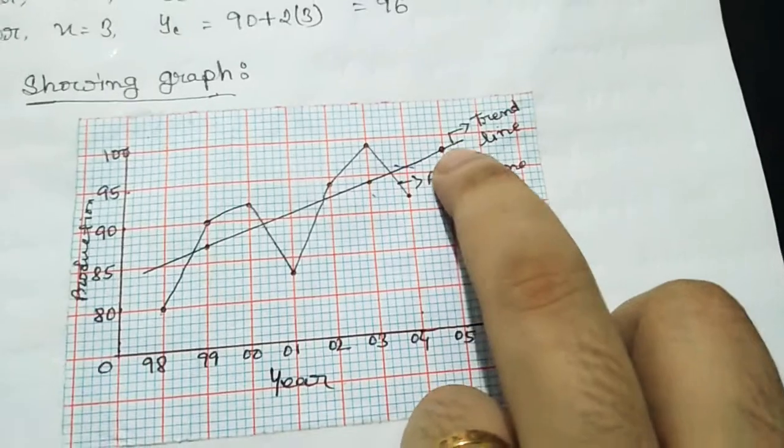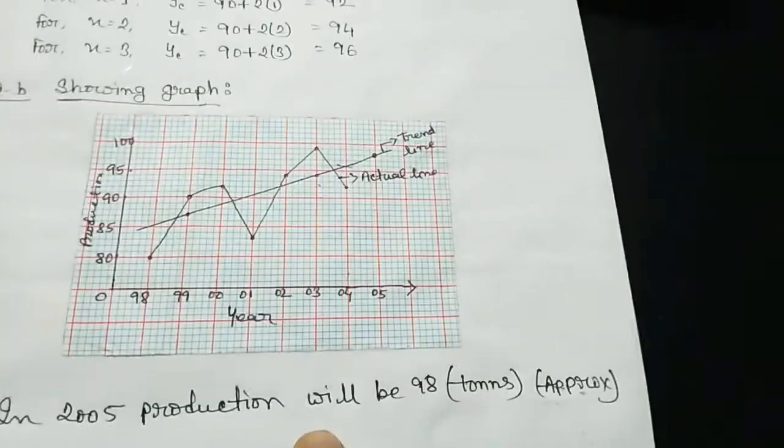96, 97, 98. That means, in 2005, it's production will be 98. How are we going to tell you?